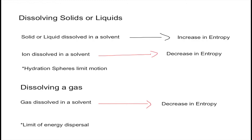Factors 3 and 4 involve solvation of solids, liquids, and gases — so dissolving them in a solvent. When a regular solid or liquid is dissolved in a solvent, it results in an increase in entropy. However, when you have an ion in a solvent, that will decrease the entropy, because the hydration spheres limit the motion of the ions. So the ions will attract the hydration spheres from the solvent, therefore having them limit their motion around the liquid or whichever solvent they're present in.